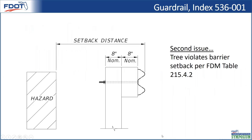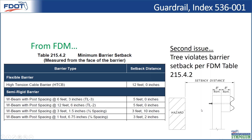Moving to the second issue regarding trees: the tree violates the barrier setback for FDM Table 215-42. The setback distance is measured from the face of guardrail to the nearest point on the hazard. For typical 6-foot-3-inch post spacing, a five-foot setback is required. W-beam guardrail is considered semi-rigid barrier — it absorbs energy upon impact and is designed to rotate backwards, so you need sufficient clear space without any hazards to interfere with that rotation.